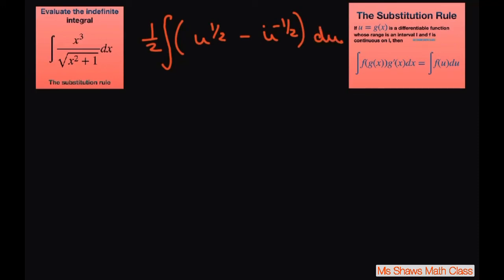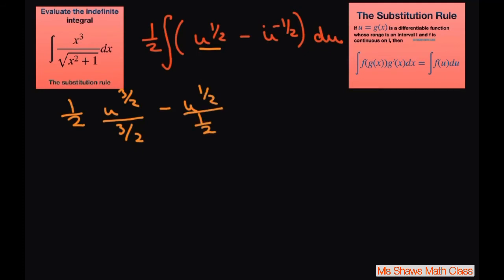Now we can integrate. We still have our 1 half out front. Applying the power rule, we get u to the 3 halves divided by 3 halves, minus u to the 1 half divided by 1 half, plus C.